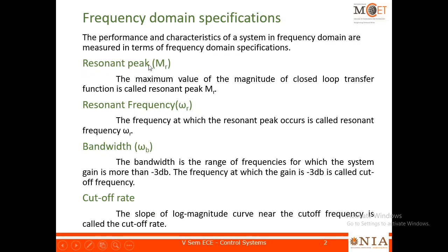The first specification is resonant peak, which is denoted by M suffix R. Before we enter into the definitions of these specifications, kindly bring to your mind the frequency response curves discussed in the previous video — the curve between magnitude and log frequency, and the curve between phase and frequency. Just bring that to your mind so that you will understand the various frequency domain specifications. Resonant peak is the maximum value of magnitude of the closed loop transfer function.